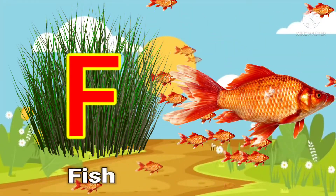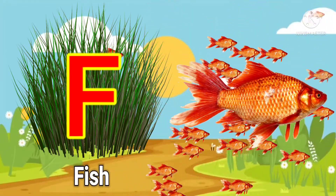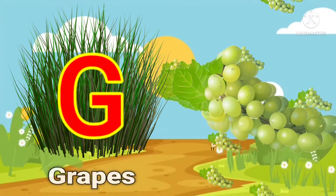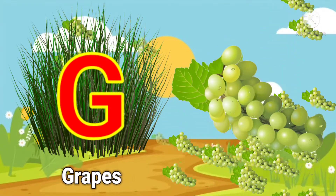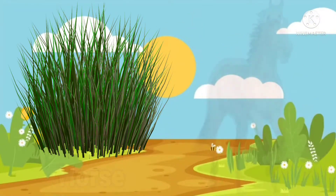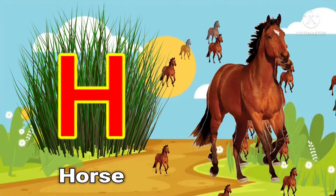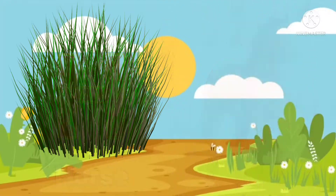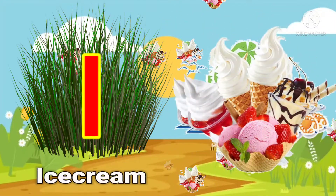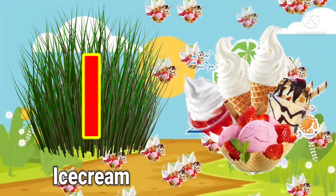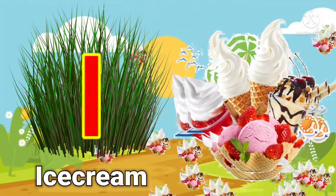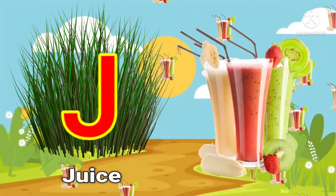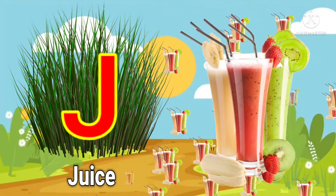F for fish, G for grapes, H for horse, I for ice cream, J for juice.